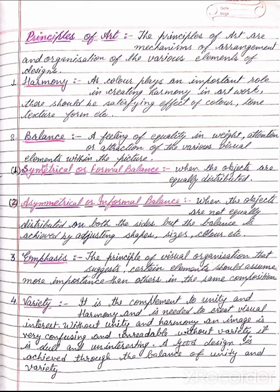Symmetrical or formal balance is when objects are equally distributed. Asymmetrical or informal balance is when the objects are not equally distributed on both sides, but balance is achieved by adjusting shapes, size, color, etc.